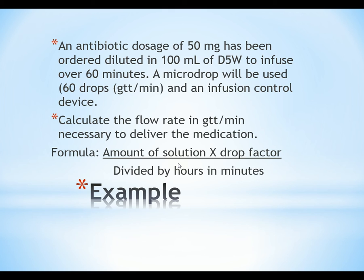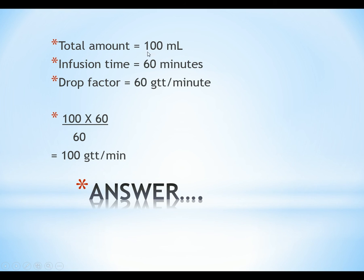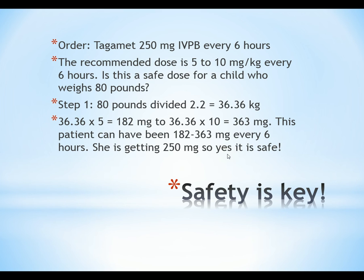For calculating drops per minute, the formula is: amount of solution times drop factor divided by time in minutes. Example: An antibiotic dose of 50 mg diluted in 100 mls, infusing over 60 minutes, with a micro drop factor of 60. So: 100 times 60 divided by 60 equals 100 drops per minute. This formula applies the same way as for adults.